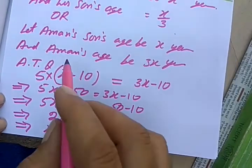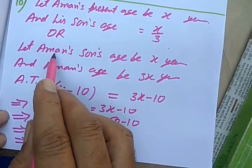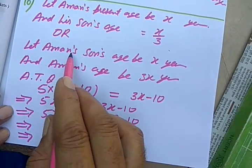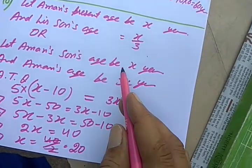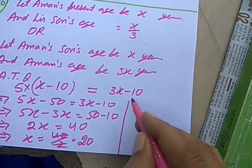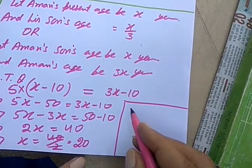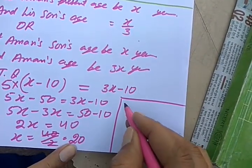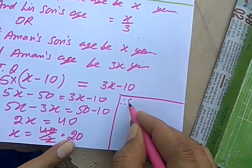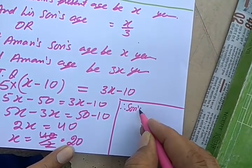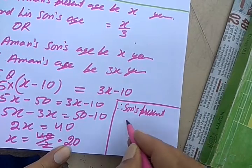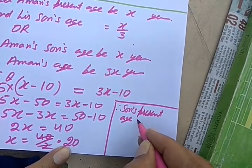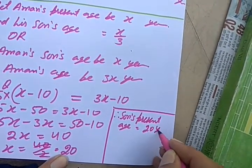So in this case, we have taken up son's age to be X. If son's age is X, that means this is son's present age. Therefore, son's present age is 20 years.